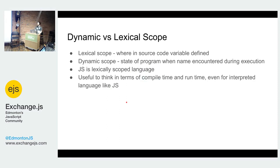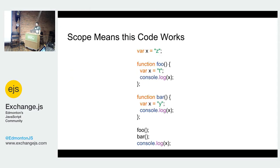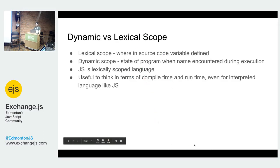So there's two types of scope. There's lexical scope. And in lexical scope, what's important is where in the source code the variable is defined. That is quite literally like what line number it's defined in. The second type is dynamic scope. And dynamic scope works with the state of the program at runtime when a name is encountered. Examples of dynamically scoped languages are Emacs Lisp and actually Bash. I'm not going to talk about dynamic scope today because JavaScript is a lexically scoped language.